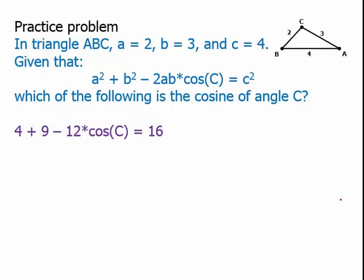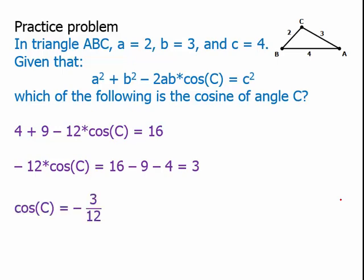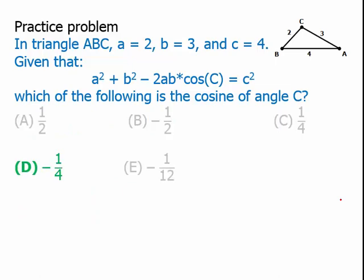Plugging in, we get 2 squared, which is 4, plus 3 squared, which is 9, minus 12 cosine C equals 16. Subtract the 9 and the 4. So we get negative 12 cosine C equals 16 minus 9 minus 4, which is 3. Divide by negative 12, we get cosine of C equals 3 divided by negative 12, or negative 3 over 12, which is negative 1 quarter. So indeed, the cosine is negative, and the answer is D.